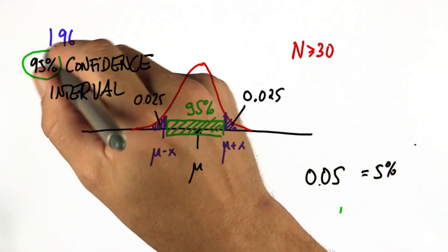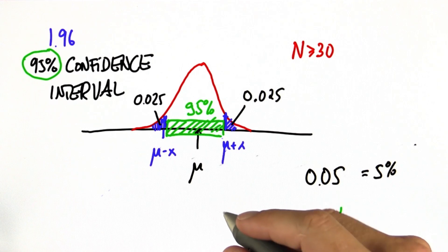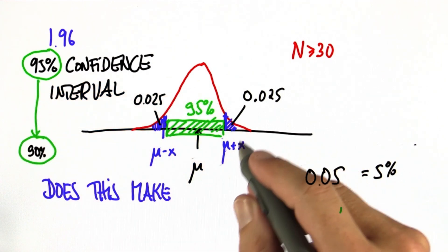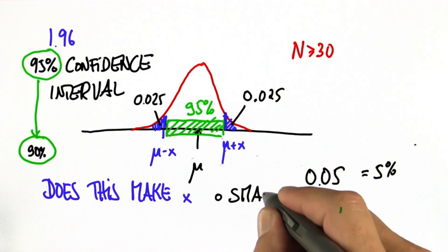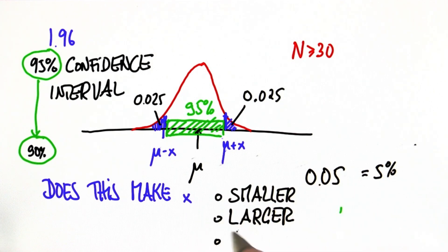Let me ask you a quiz. Suppose you go from 95% to 90%. Does this make x smaller, larger, or will there be no change? Which one is it?